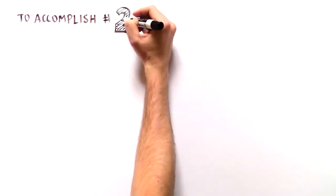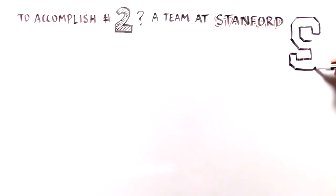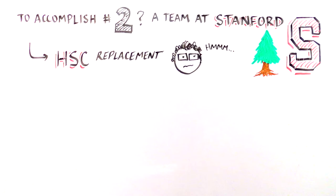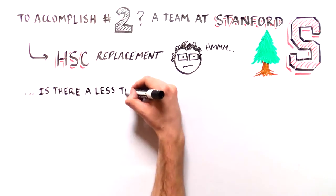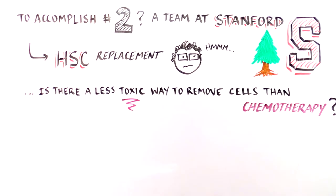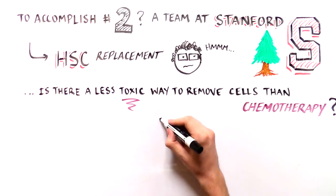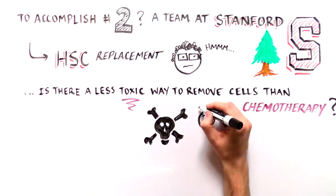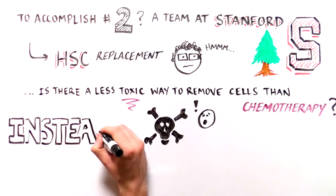Another team of researchers at Stanford have developed a complementary approach which we'll call HSC replacement. In order to allow the repaired HSCs to work, the defective HSCs must first be removed. As we mentioned, currently SCID children receive chemotherapy to remove the defective HSC. However, chemotherapy is toxic, so these researchers want to remove the defective HSC in a safer way.